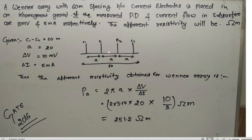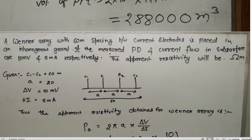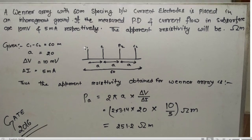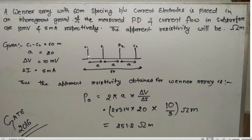P1 and P2 are the potential electrodes while C1 and C2 are the current electrodes. The distance between the potential electrodes and the current electrodes are equal — that spacing is 'a'. The question: a Wenner array with 60 meter spacing between the current electrodes is placed in a homogeneous ground.